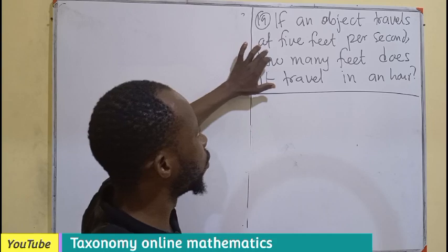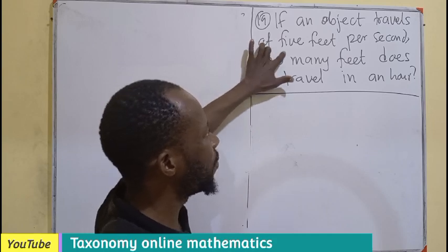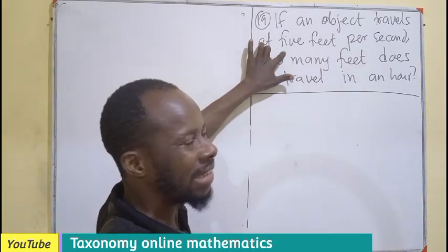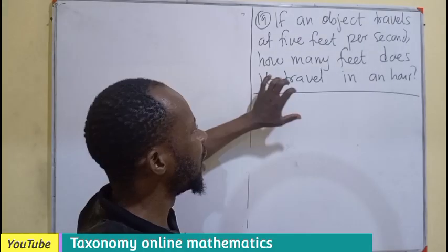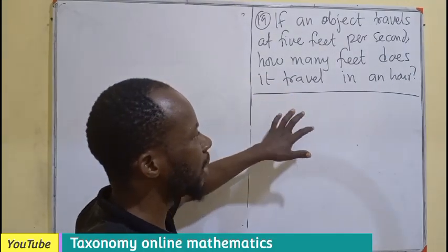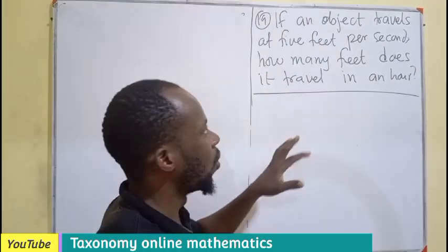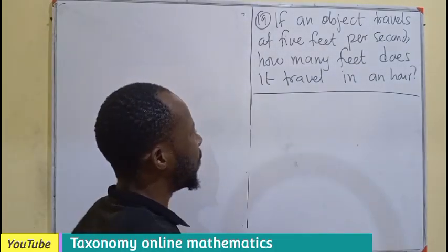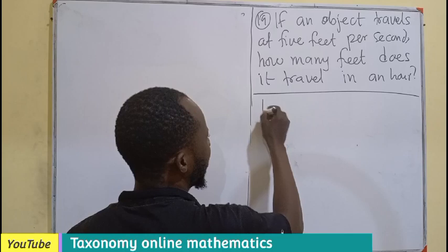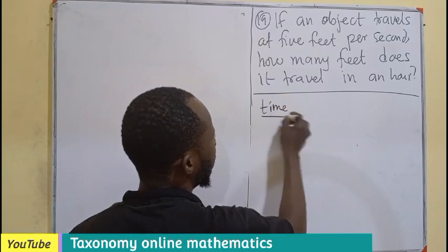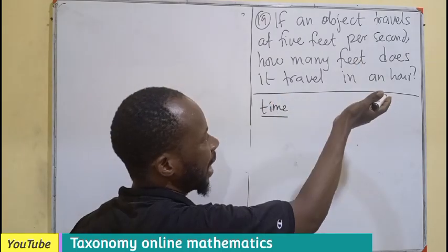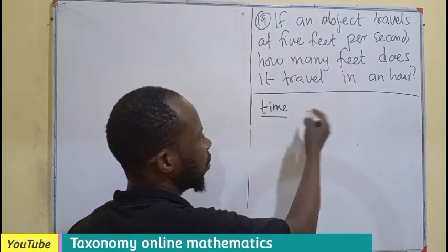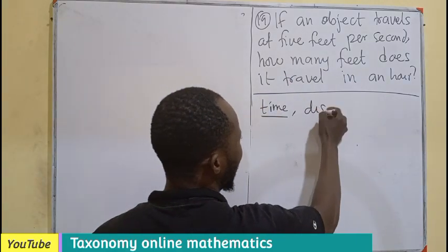If an object travels at 5 feet per second, how many feet does it travel in an hour? So, we can see that this is more like a ratio, because we are having feet. We have time here as an hour and seconds. We also have feet, which is going to be our distance.